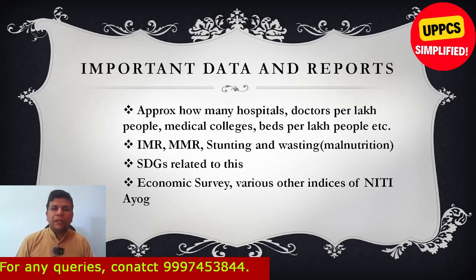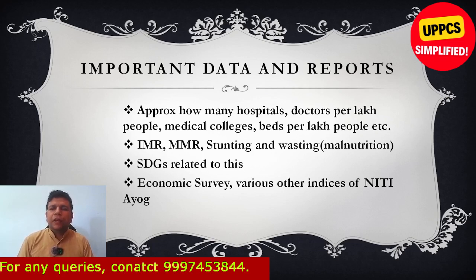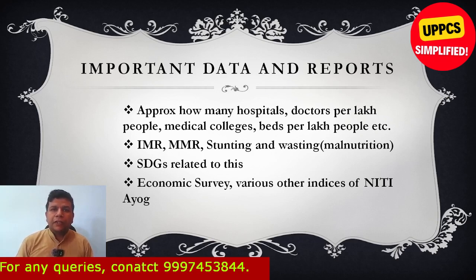First, where to get data and reports, and what data needs to be remembered. For example, how many hospitals — not an exact number but a ballpark estimate — how many PHCs are there in UP, or how many tertiary care hospitals. Similarly, how many doctors per lakh, how many beds per lakh, how many medical colleges — there have been many new medical colleges opened. Apart from that, other data such as IMR (infant mortality rate), maternal mortality rate, wasting, stunting — that is malnutrition data — all that should be on your tips.